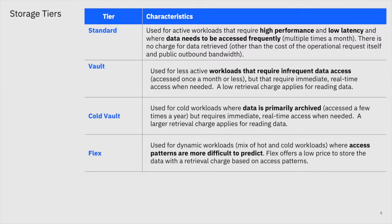For data accessed even less frequently, we have a cold vault. Data can still be accessed in real time when you need it, but it's used for cases where data is only accessed a few times a year or even less. Choosing one of these options requires that you understand how often you're going to be accessing the data. For those where it's more difficult to predict access patterns, we have a flex option, used for a mix of hot and cold workloads. Finally, we have automatic archiving so you can set up policies to move data from one tier to another as your access needs change.